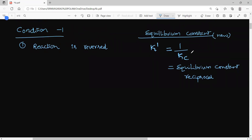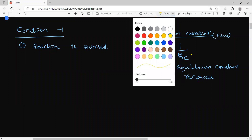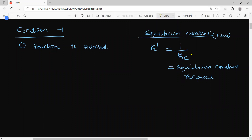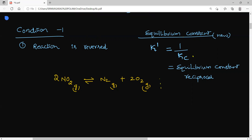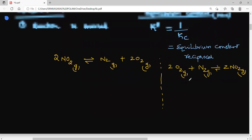Let us consider one example. Take the equation: 2NO₂ (g) ⇌ N₂ (g) + O₂ (g). Now I have reversed the equation: 2O₂ (g) + N₂ (g) → 2NO₂ (g). I have reversed this equation. Is there any change in the equilibrium constant? Let us check.